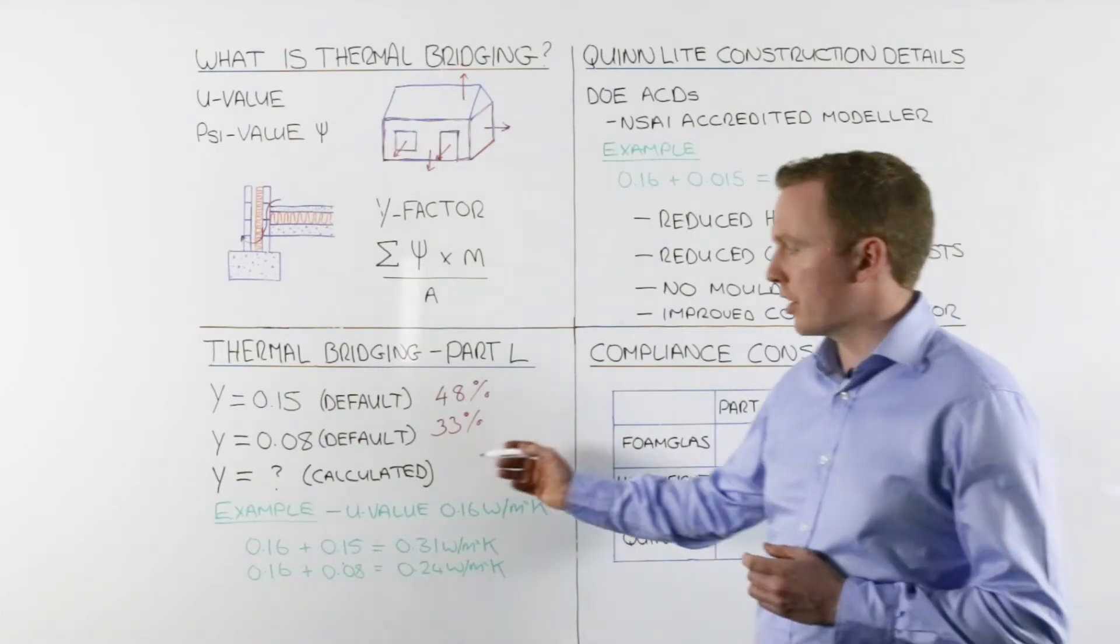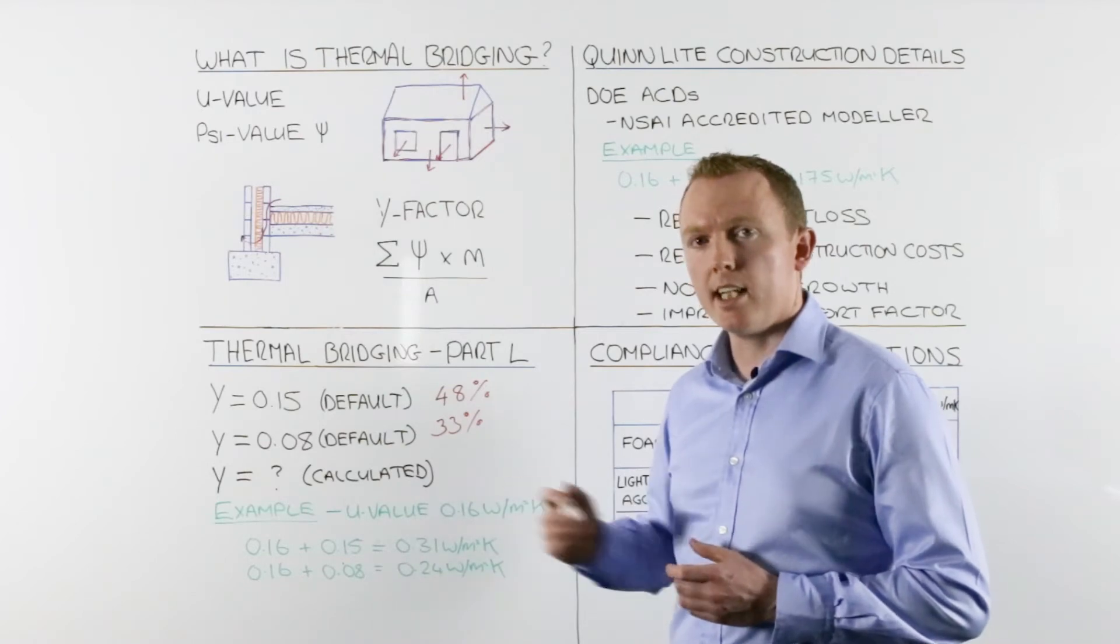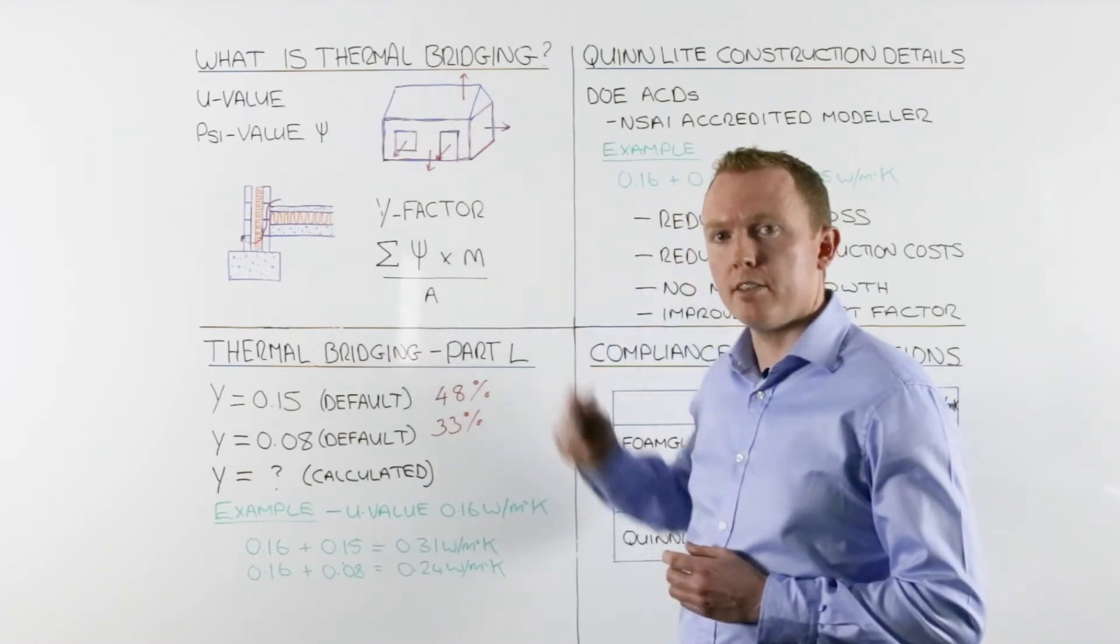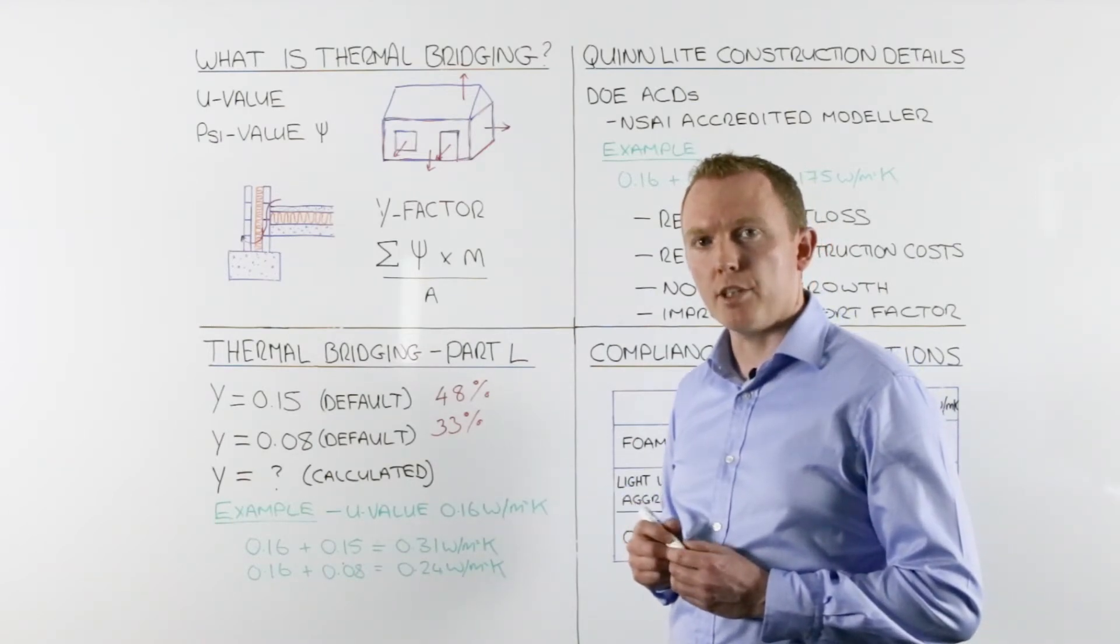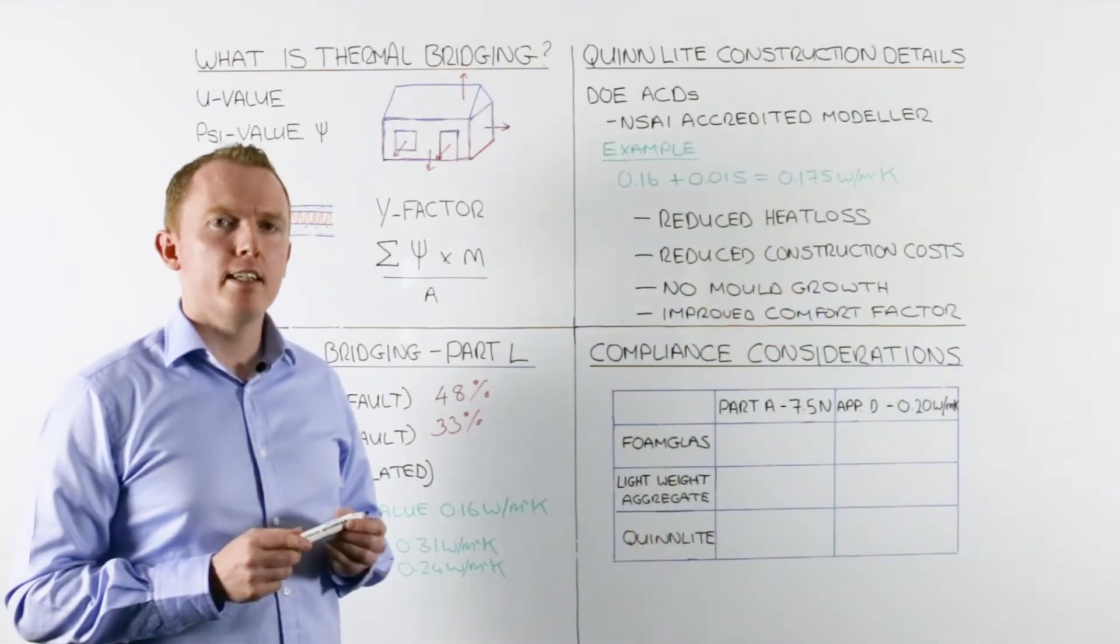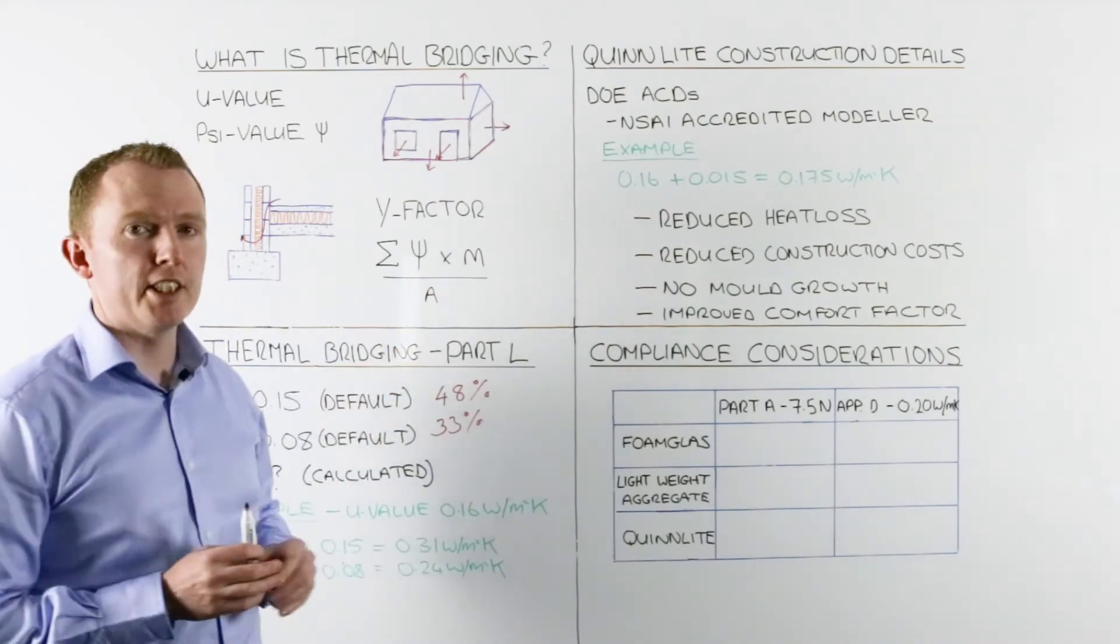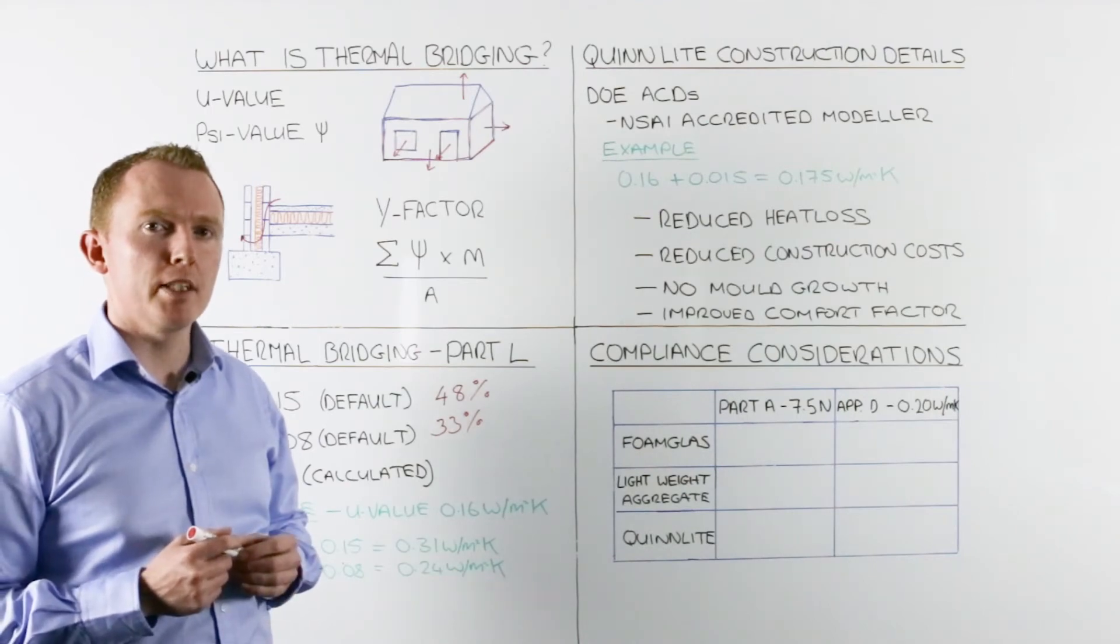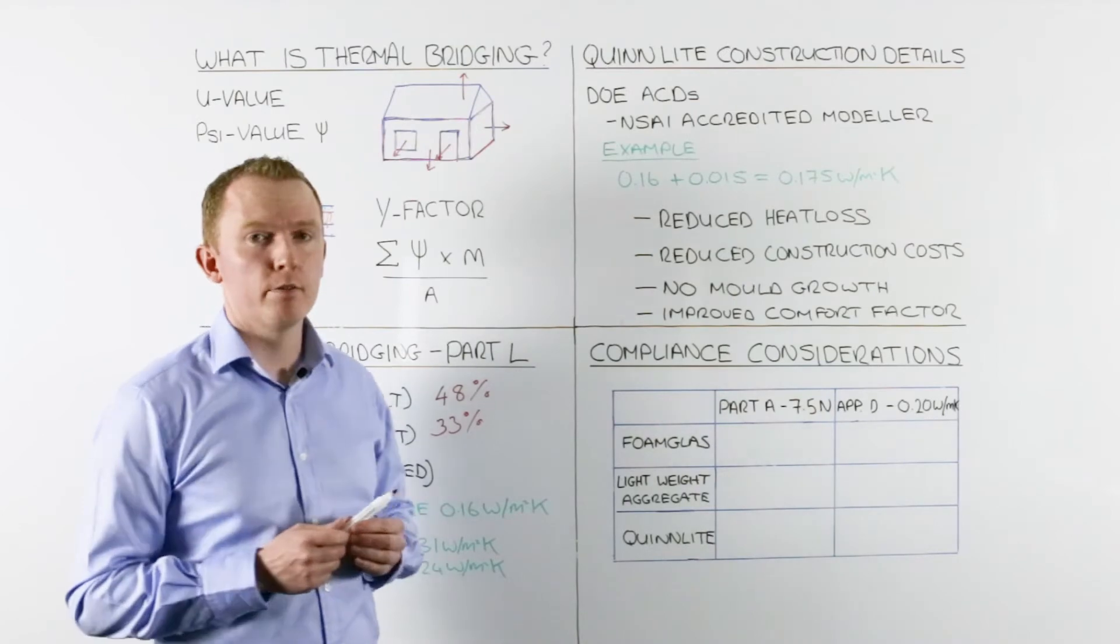The third option for dealing with thermal bridging within Part L is to calculate the Y-factor based on the method we've shown here, and this is the option which we encourage BER assessors to use. To calculate the Y-factor using this method, we need the ψ-value for each junction in the building. Thermally modeling each junction can be costly and time-consuming, so in Quinlite we've done that for you.